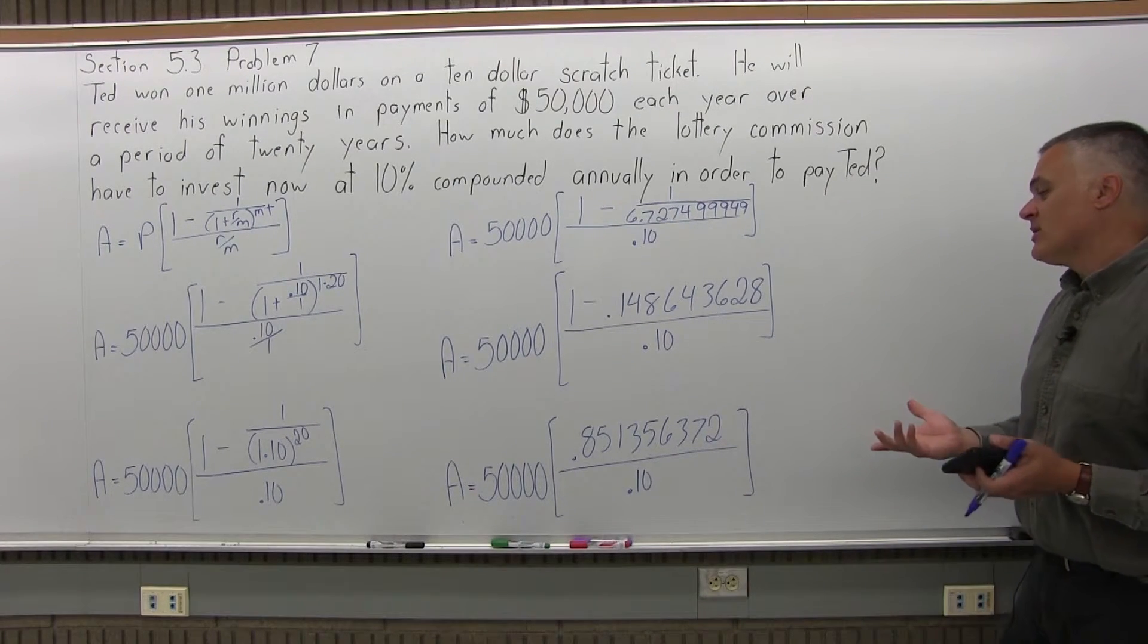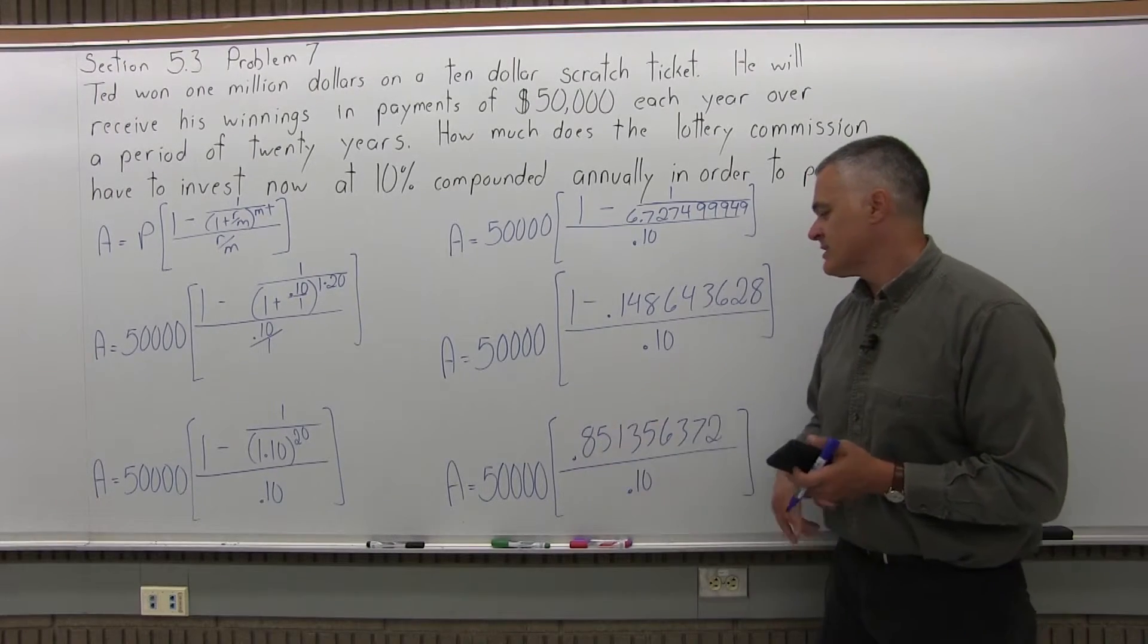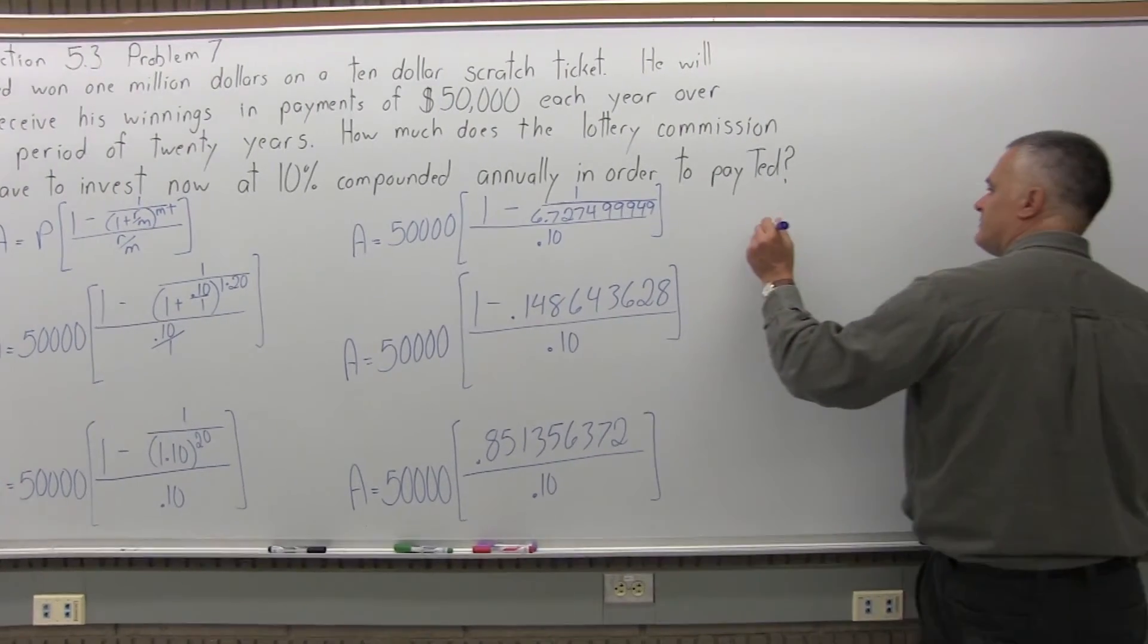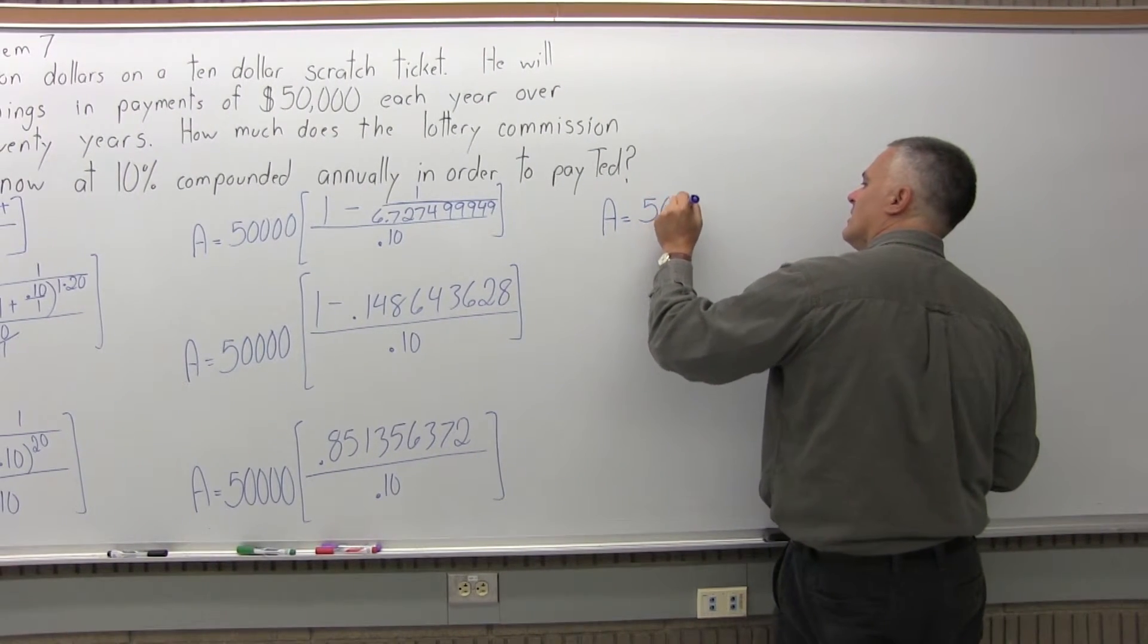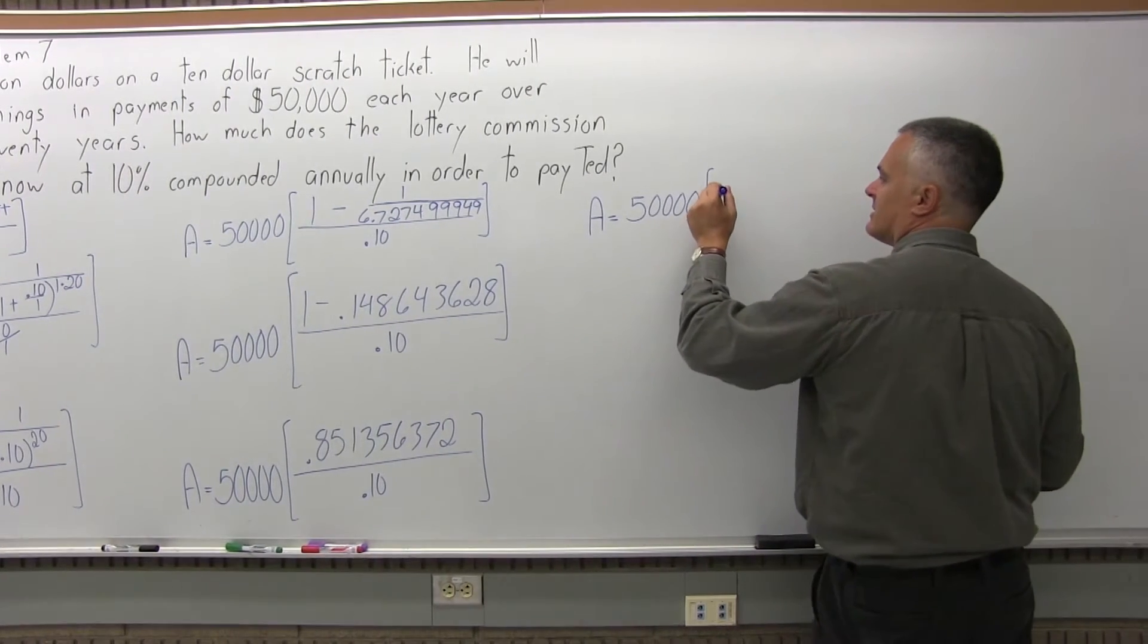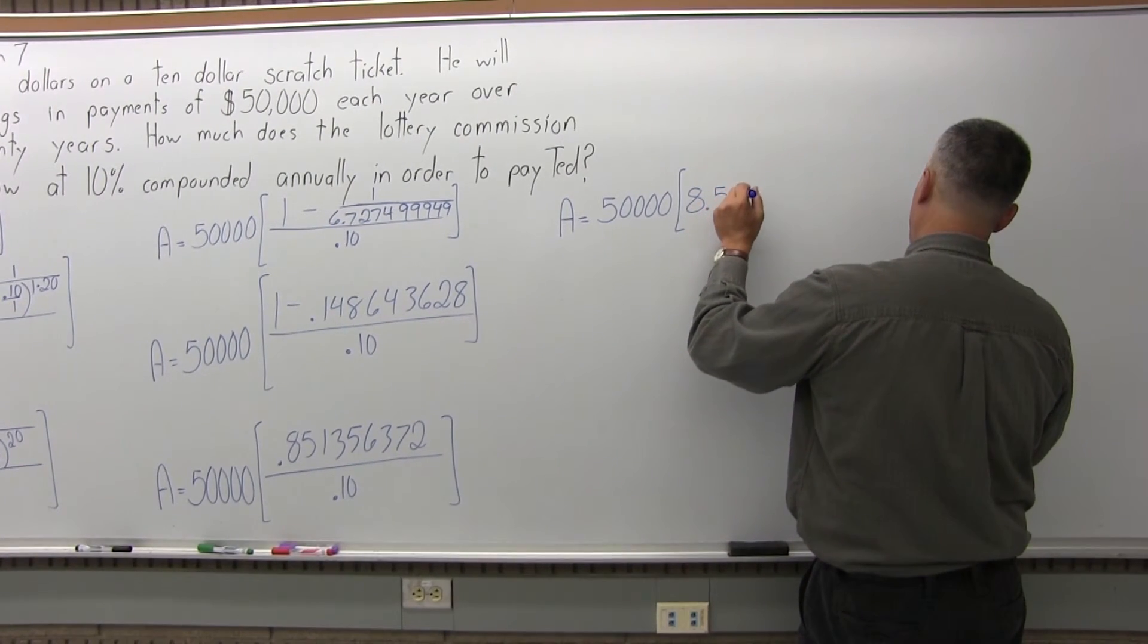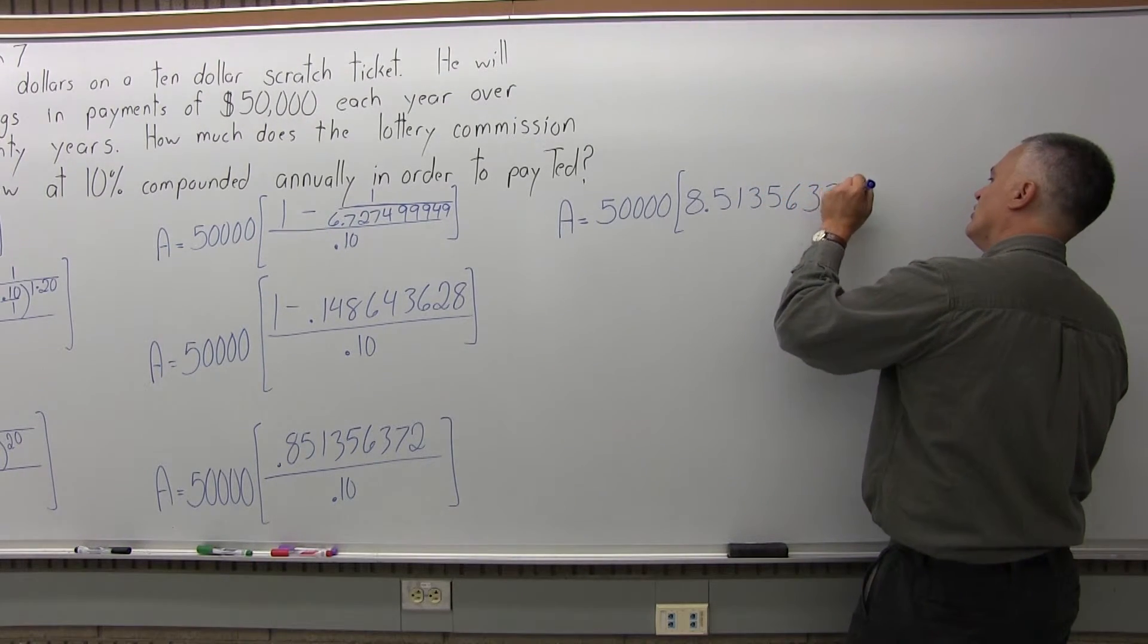So, I can divide the value in the brackets, .85 something divided by .10. It should just pull the decimal over to be 8.5, but I'll just make sure with my calculator. And it does. So, I'll have A equals 50,000 times in the brackets. Like I said, it's going to be the same digits, but with the decimal between the 8 and the 5. So, it'll be 8.51356372.